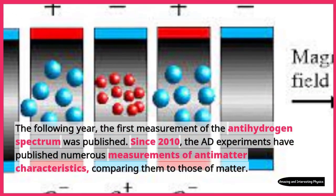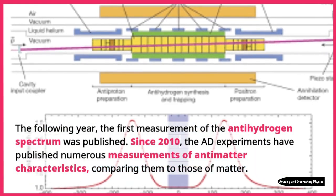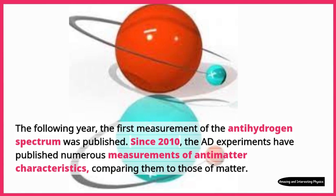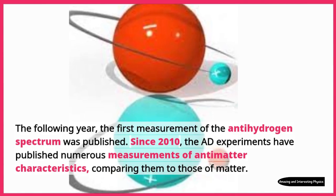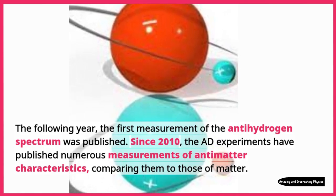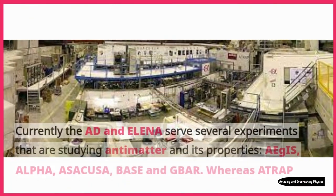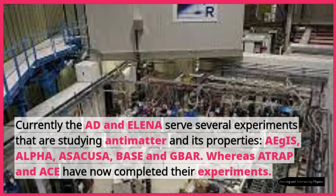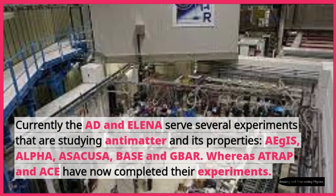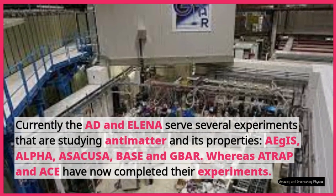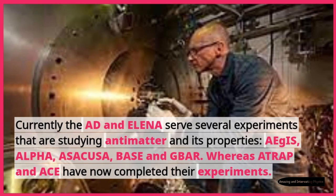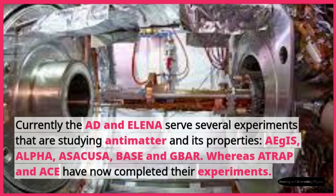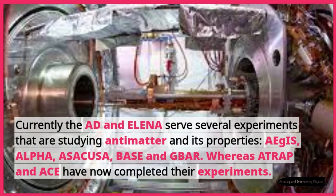Since 2010, the AD experiments have published numerous measurements of antimatter characteristics, comparing them to those of matter. Currently the AD and ELENA serve several experiments that are studying antimatter and its properties: AEGIS, ALPHA, ASACUSA, BASE, and GBAR, whereas ATRAP and ACE have now completed their experiments.